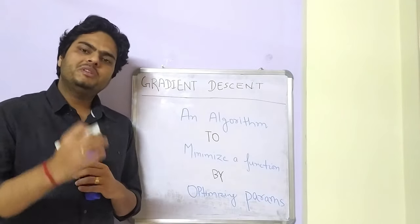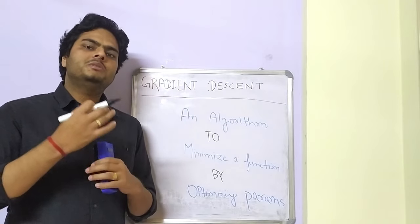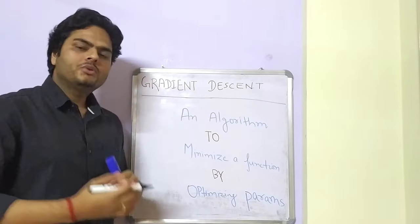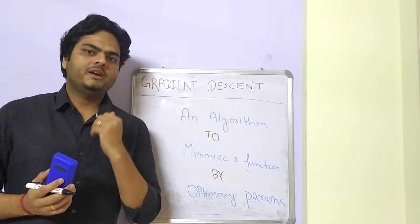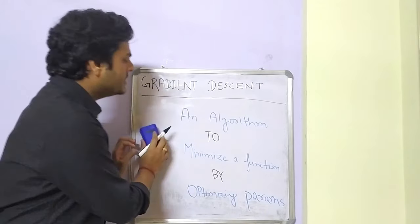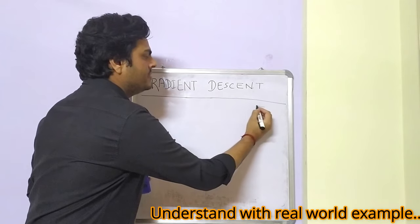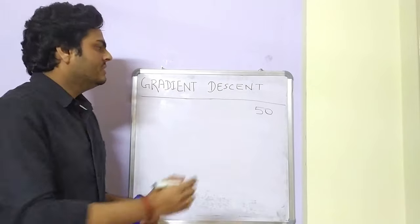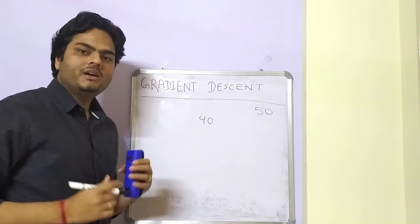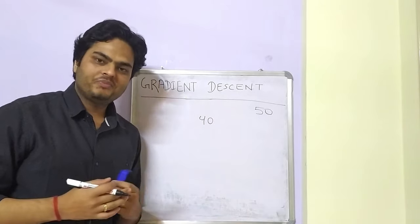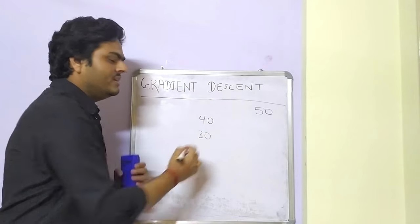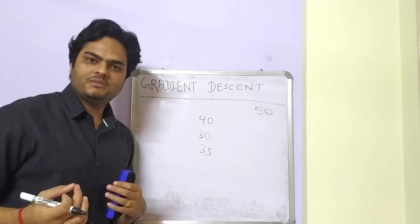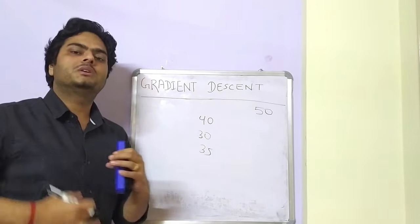Gradient descent is basically an algorithm — a set of instructions that works on some given data in a particular way. Let us relate this with a real world example. Let's say you go and attend a mathematics test where the maximum marks is 50. You come to me and I ask how much you scored. You say guess, I guess 40, and you say no, 40 is too much. I say 30, you say not that less either. I say 35, and you say I am coming close. This is exactly how gradient descent works internally.